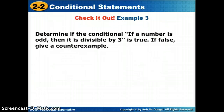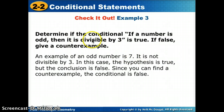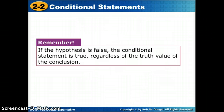'If a number is odd, then it is divisible by 3.' If I pick 7, it is odd — so the hypothesis is true — but 7 is not divisible by 3, so the conclusion is false. We found a counterexample, so the conditional is false. Note: if the hypothesis is false, the conditional statement is technically true regardless of the conclusion.